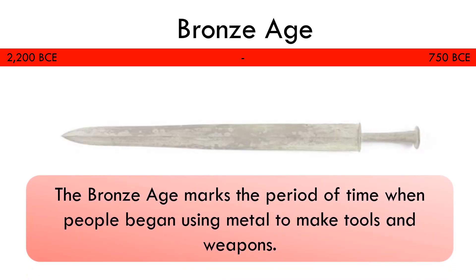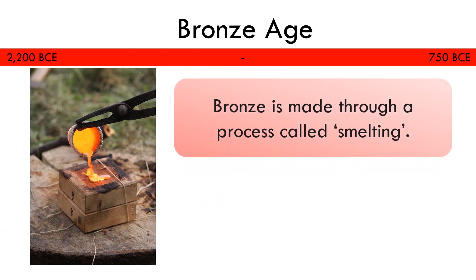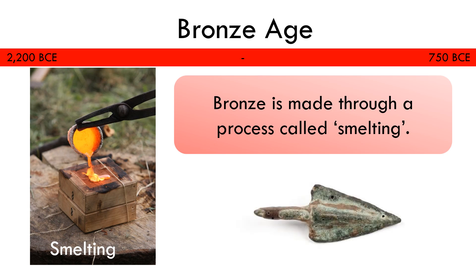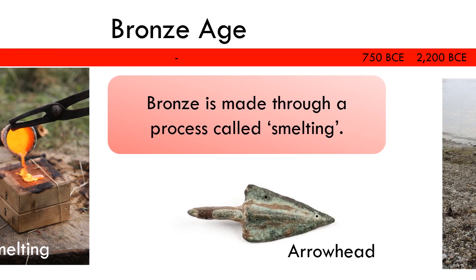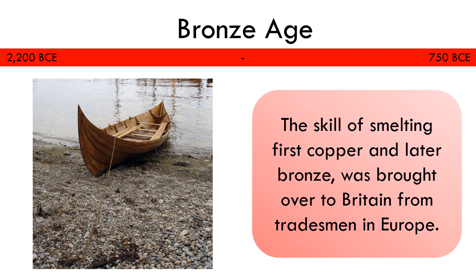The Bronze Age marks a period of time when people began using metal to make tools and weapons. Bronze is made through a process called smelting, which involves heating rocks to extract the metal ore and pouring the liquid substance into a clay mould. Smelting, first copper and later bronze, was first brought over to Britain by tradesmen in Europe.